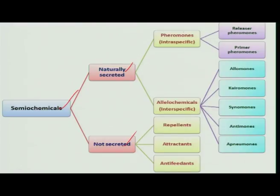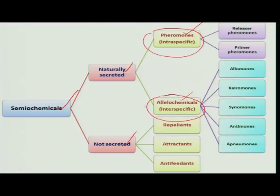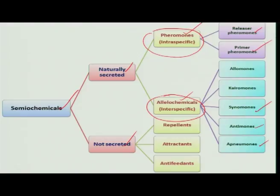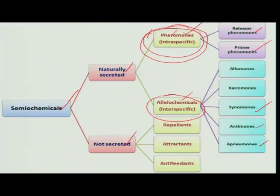Under naturally secreted semiochemicals, we have pheromones and allelochemicals. Pheromones are for communication between members of the same species — that is, intraspecific communication. Under allelochemicals, we have allelomones, kairomones, synomones, antimones, and mnemones. In pheromones, we have two groups: releaser pheromones and primer pheromones. From the point of pest management, we have extensive information about these pheromones, which have been used for many years for modifying insect pest behavior to the advantage of pest management programs. In the next class, we will deal more about pheromones and their application in pest management.